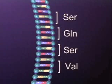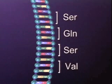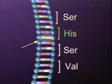Here we see four codons and their corresponding amino acids. A change within the second triplet results in a change in the amino acid. None of the other amino acids are affected.